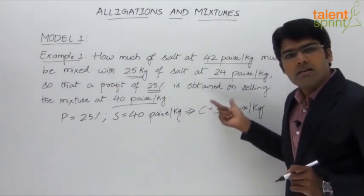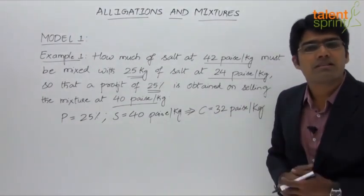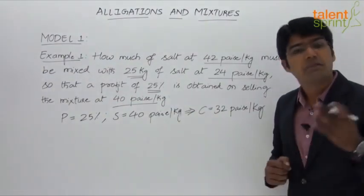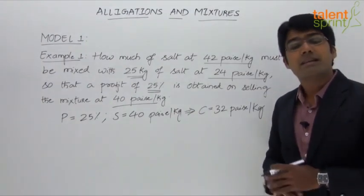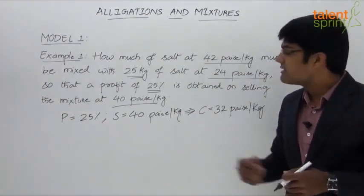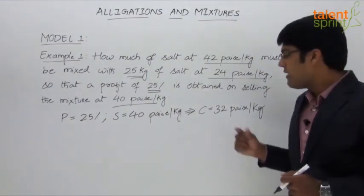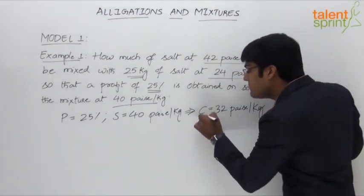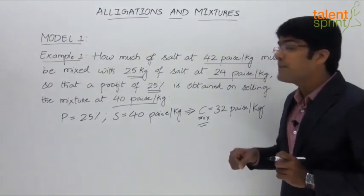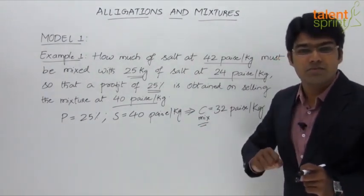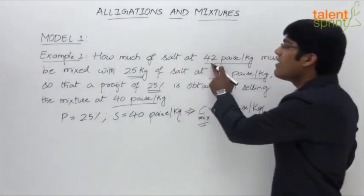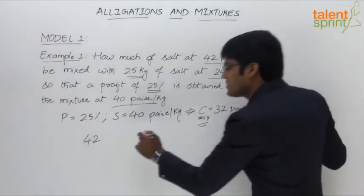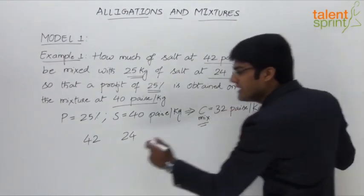The calculation is straightforward using basic profit and loss knowledge. Selling price is 40 paisa and profit is 25%, so cost price works out to 32 paisa per kg. Now that we have the cost price of the mixture as 32 paisa per kg, we can apply the allegation rule. The cost price of the dearer quality is 42, the cheaper quality is 24, and the mixture is 32.